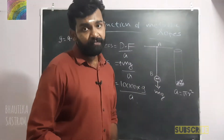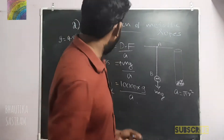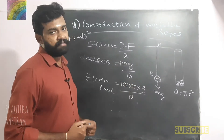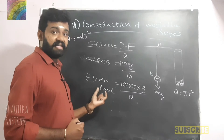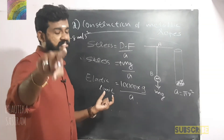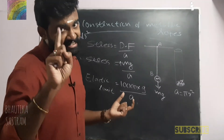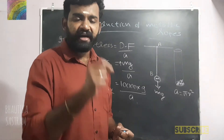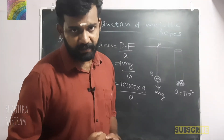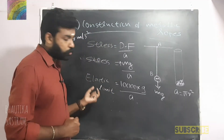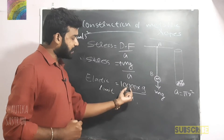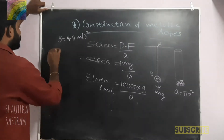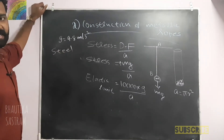You can see the stress is equal to Mg divided by area. The maximum mass we can get is 10,000 kg, and the maximum stress we can get is the elastic limit. I am going to say the elastic limit equals 10,000 into g divided by A.